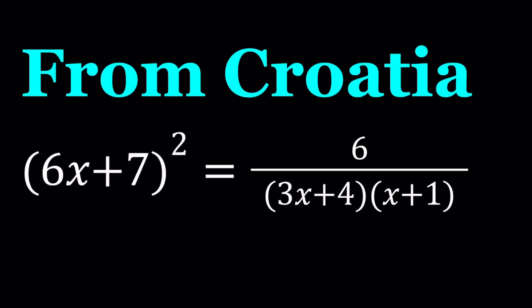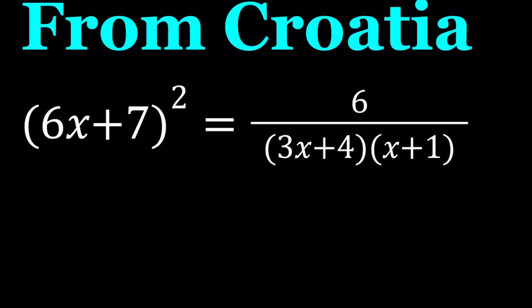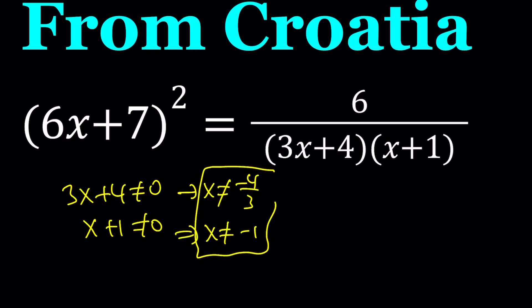So we're going to go ahead and cross multiply first, and then that'll give us the original problem. One thing to be careful about is 3x plus 4 should not equal 0, and x plus 1 should not equal 0, which means x cannot equal negative 4 thirds, and x cannot equal negative 1. So we kind of have to check these values at the end, but I don't think they're going to be an issue.